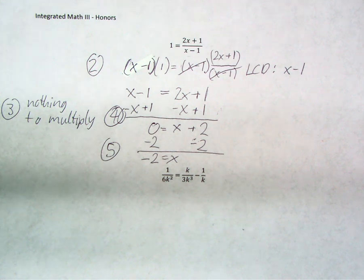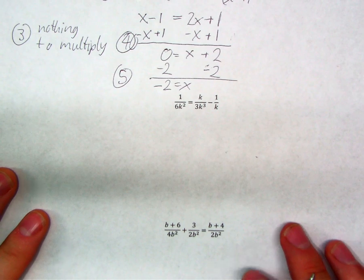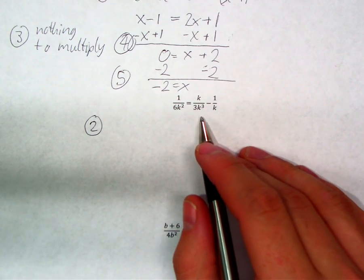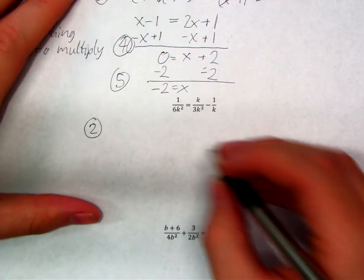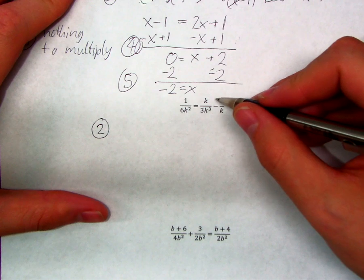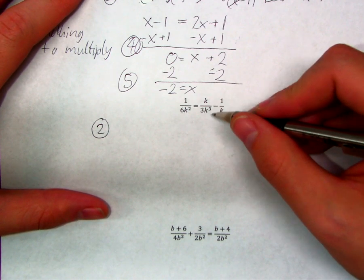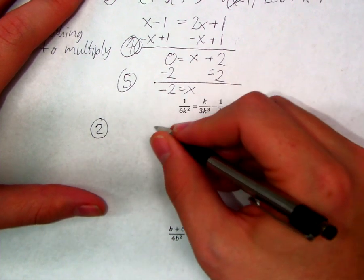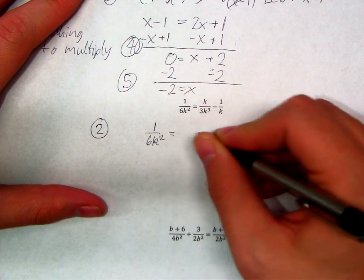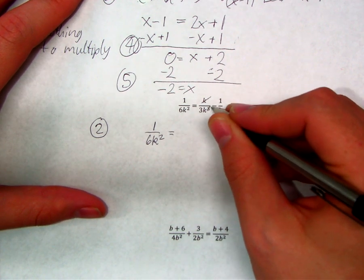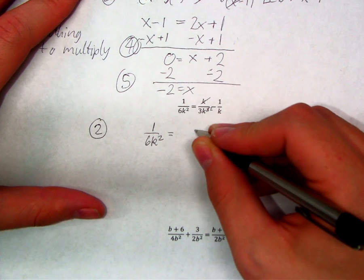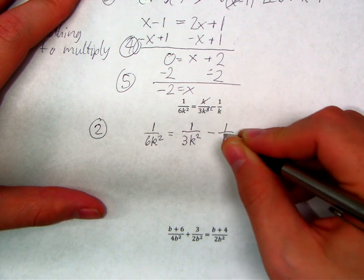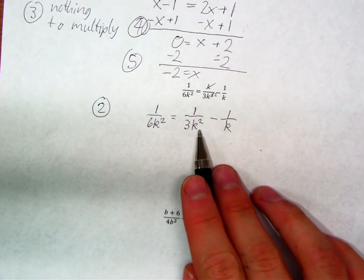Next example. Step one is already done, so we move on to step two: get rid of all denominators. Can I cancel any matching factors? Yes, in this case I can. Looking at the middle fraction, I've got a k on top and k cubed, which is k times k times k, on the bottom. So one of those k's can cancel, and I'm going to get one over six k squared equals one over three k squared minus one over k.